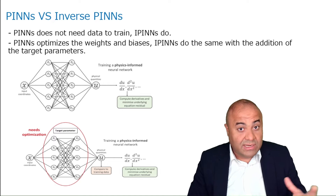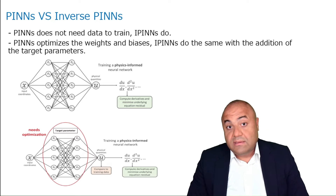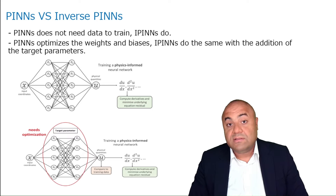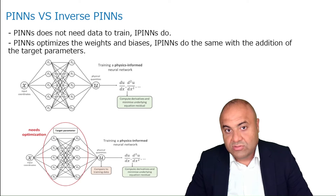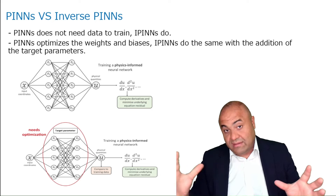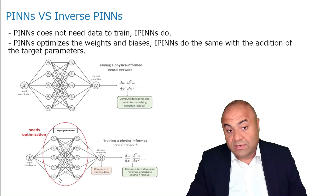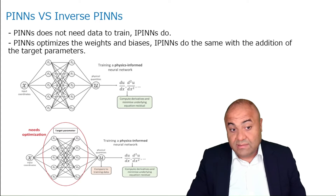In inverse PINNs, you are missing part of the governing equation — specifically a parameter you need to compute. For that, you need the results produced by that missing parameter. We know there is a missing parameter, we need to calculate it, but we know the results of the governing equation for that specific parameter. So we use this data to optimize the inverse PINNs network, which is exactly the same network as before.